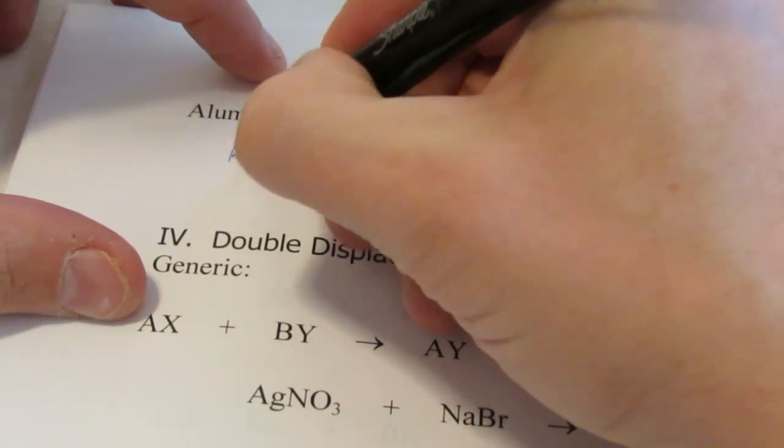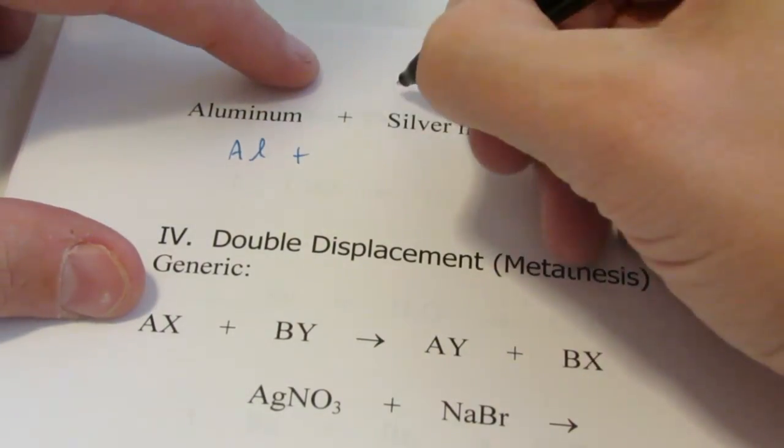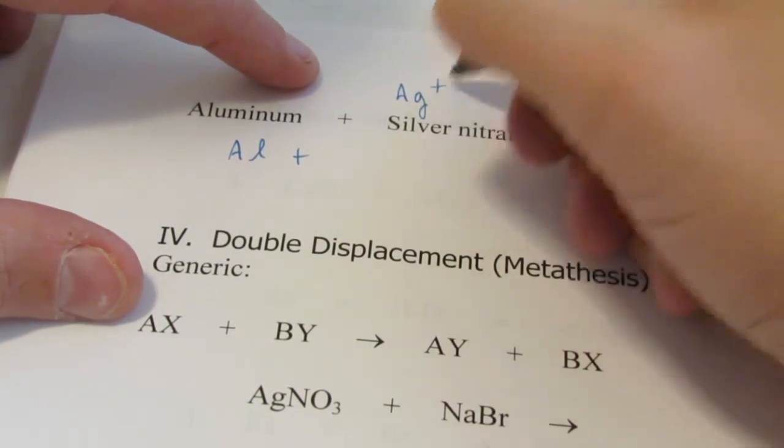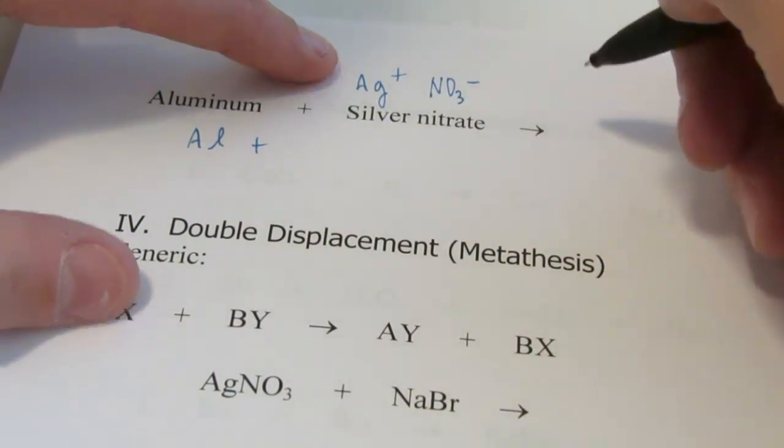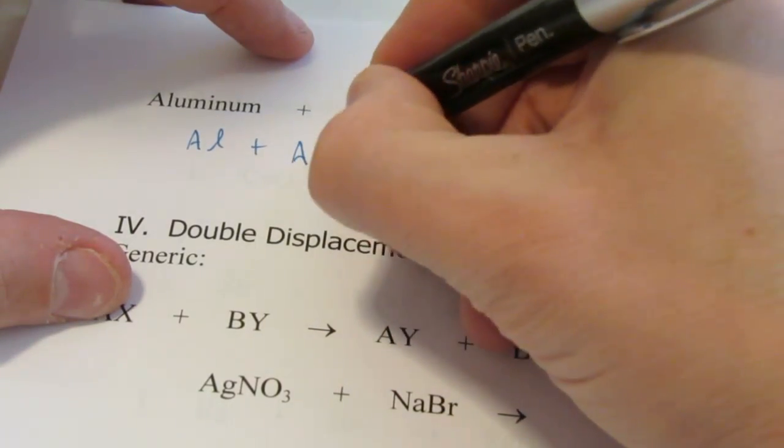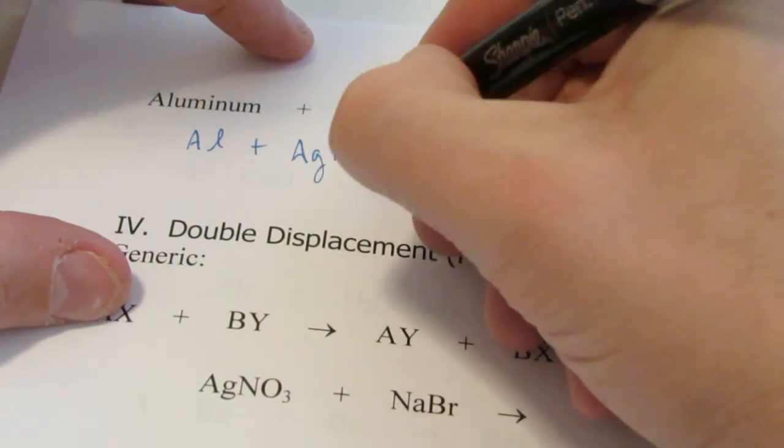Aluminum. Elemental aluminum is Al. Silver nitrate. Silver is positive 1. Remember, it doesn't need Roman numerals. It's always positive 1. Nitrate is NO3 negative. So we need one of each, AgNO3.